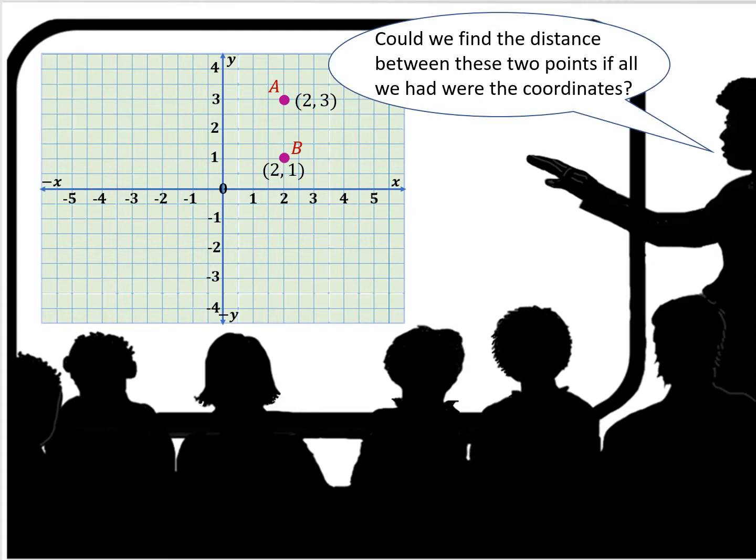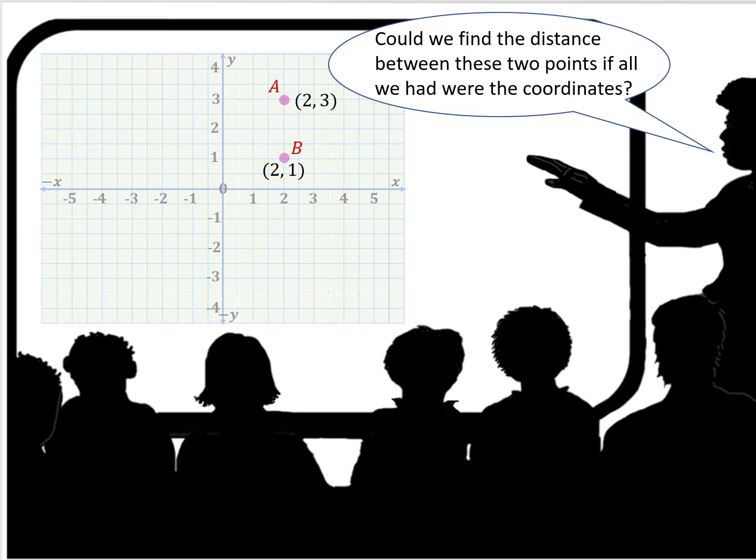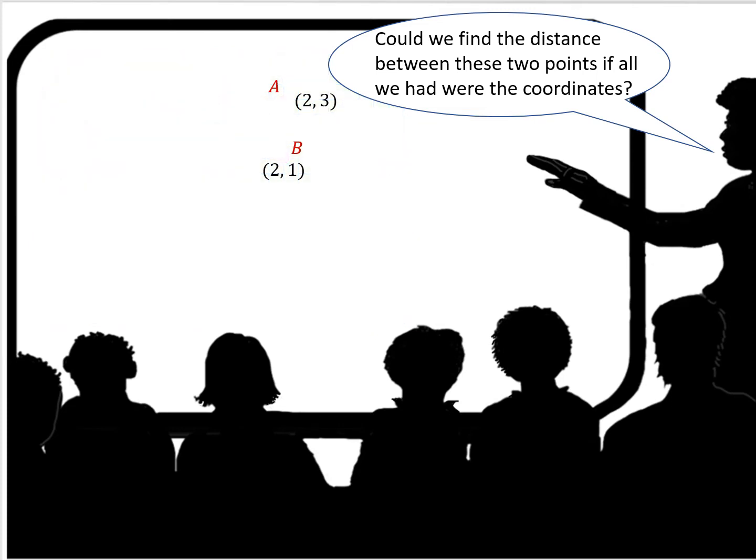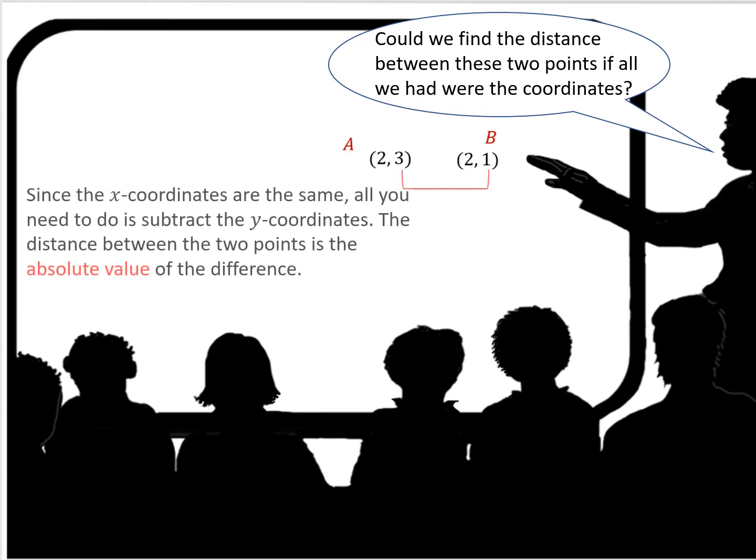Could we find the distance between these two points if all we had were the coordinates? So I have the coordinates of point A is 2, 3 and the coordinates of point B are 2, 1. Since the x-coordinates are the same, all you need to do is subtract the y-coordinates.